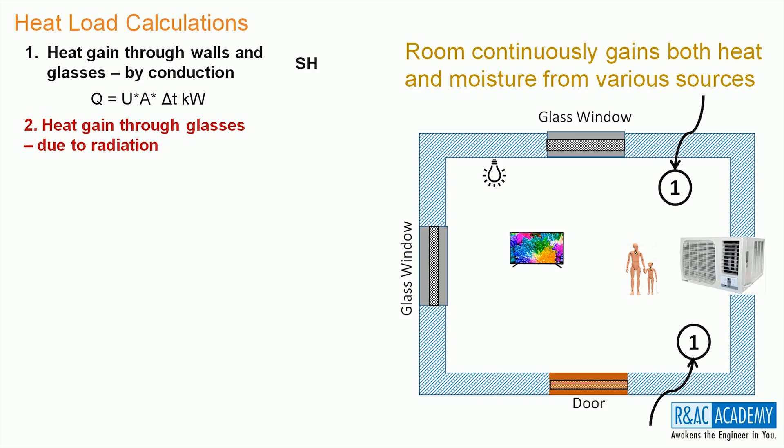The next source is heat gained through glasses due to radiation. This is the heat that flows from outside into the room through the glasses. This heat transfer happens by radiation. Only energy transfer happens in this case also. Hence, room gains only sensible heat. This is computed using this expression: Q equals area times solar heat gain per unit area. The solar heat gain per unit area can be had from the data tables.